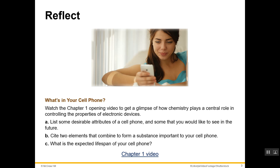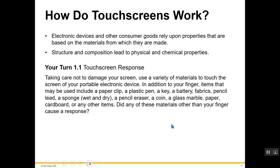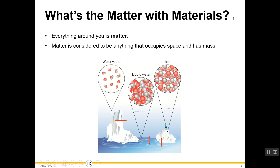A cell phone is one example of this. Everybody has a cell phone now, and if you look at the components of the cell phone, a lot of material stuff is involved in its manufacturing and usage. There is a discussion here about how touchscreens work, but I want to get to the next slide where we begin our discussion of what chemistry is all about.